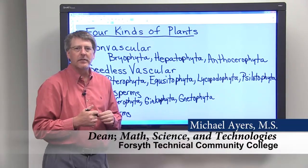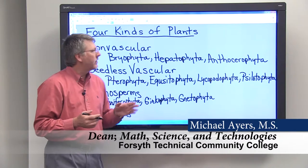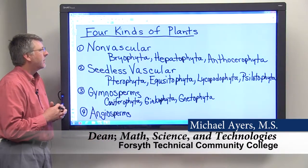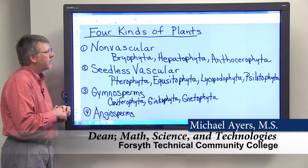So let's think about the different kinds of plants, and in general there are four different kinds, and it's easy enough to understand.